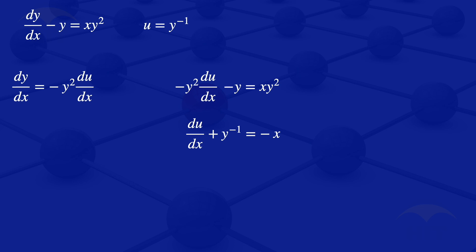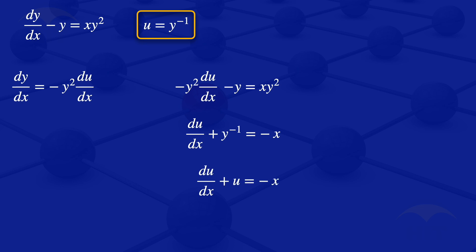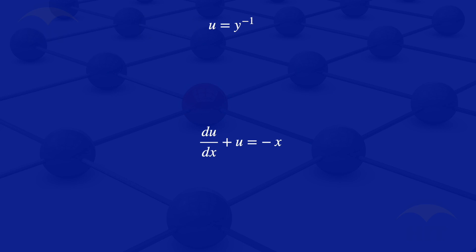Looking at our substitution, we said u equals y to the power minus 1, and we have y to the power minus 1 here. Using this, y to the power minus 1 is u. So our differential equation becomes du/dx plus u equals minus x.